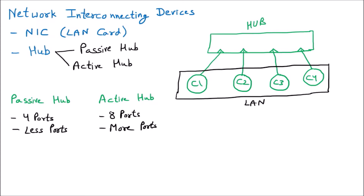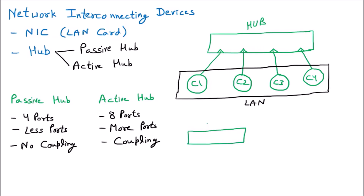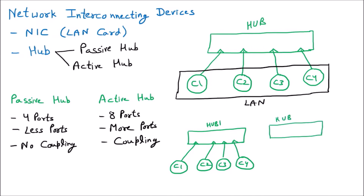The number of ports is not the real differentiation between active and passive hubs. The real difference is coupling. Coupling means joining together. In the passive hub, there is no coupling, but the active hub supports coupling. For example, I have Hub 1 with four ports connecting computers C1, C2, C3, and C4. If I want more computers, it is not possible with the passive hub because coupling is not supported.